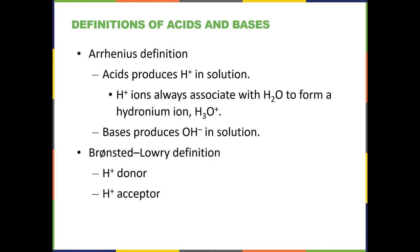We have two different definitions of acids and bases. First is the Arrhenius definition, which is that acids produce H⁺ in solution and bases produce OH⁻ in solution. Then we have the Brønsted-Lowry definition, where acids are H⁺ donors — hydrogen with a positive charge is hydrogen without an electron, essentially a proton. A Brønsted-Lowry acid is an H⁺ donor, and a base is an H⁺ acceptor. This is the definition we'll work with most in this chapter.